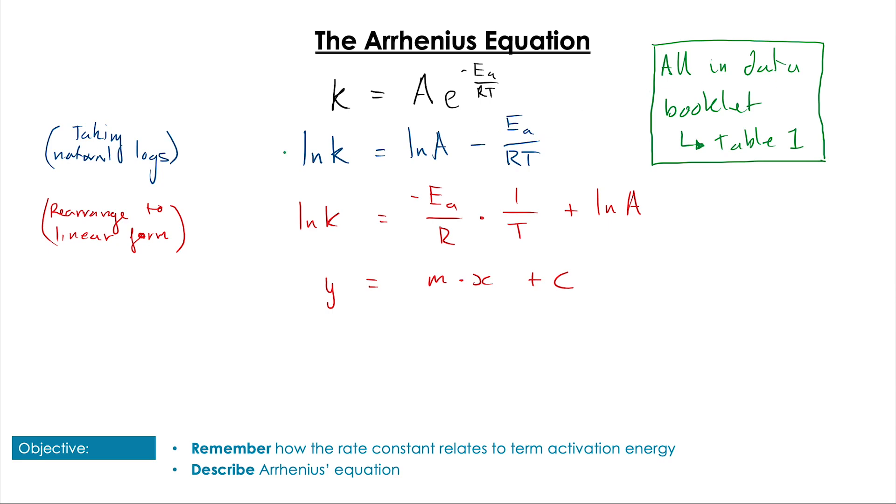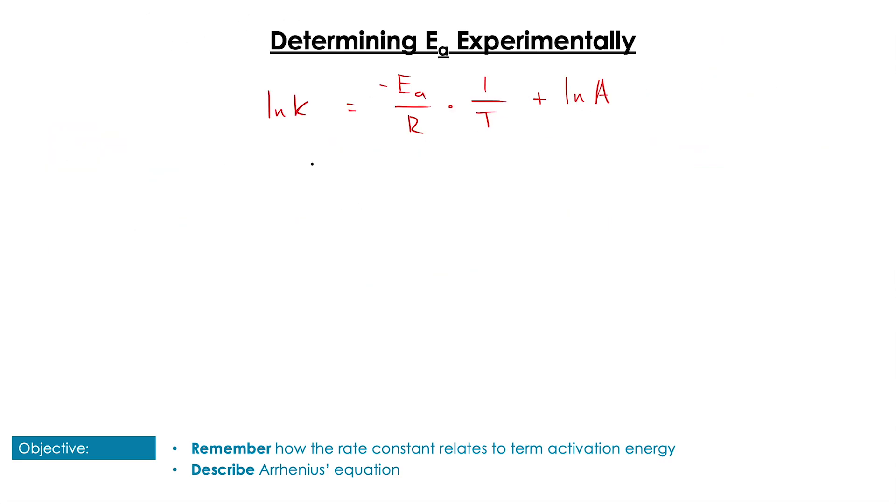So how do we go about determining activation energy experimentally? As I mentioned, we're going to need a graph to get that linear line from, and the graph we need is 1 over T on the x-axis and ln k on the y-axis: y equals mx plus c.